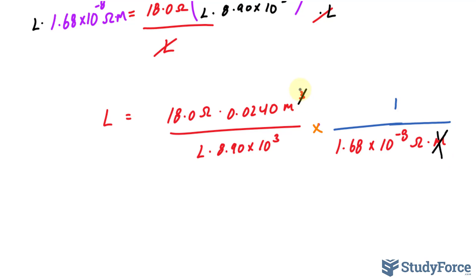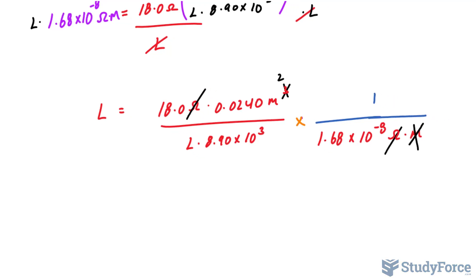This will cancel out with one of these. That becomes a 2. Omega cancels out. And we are left with technically meters squared on the right side. We still have an L underneath here. So I'll multiply both sides by L to cancel that out. And I have L squared now.